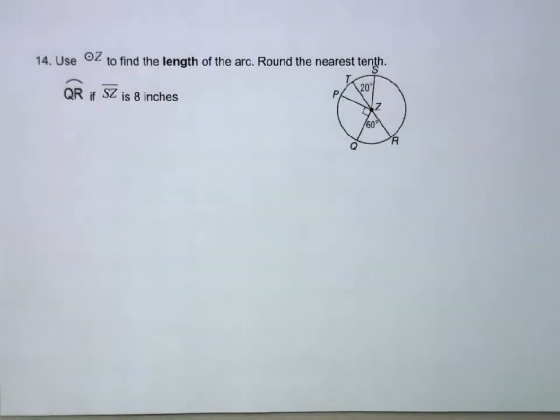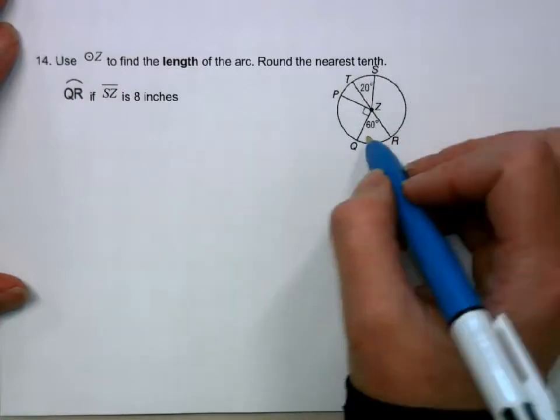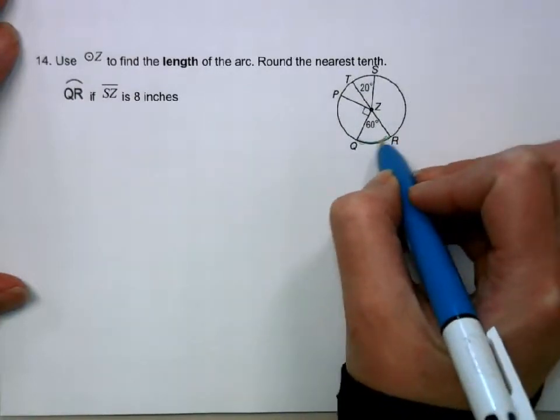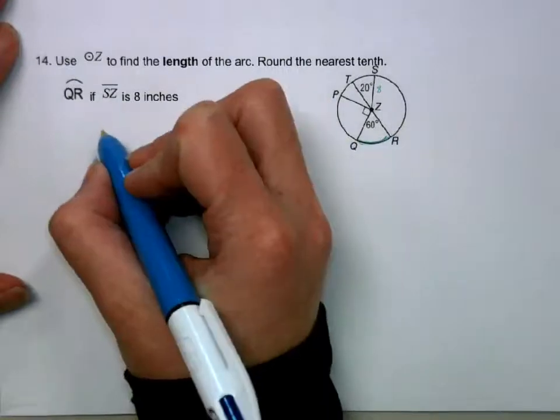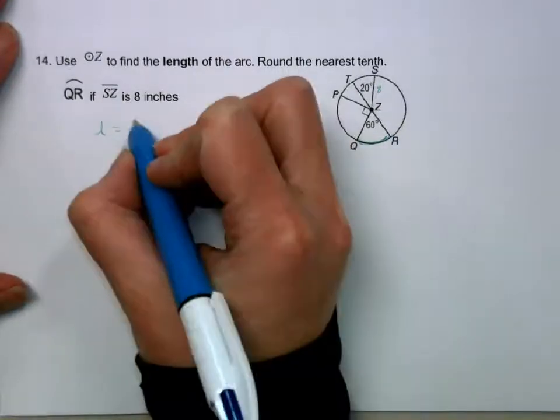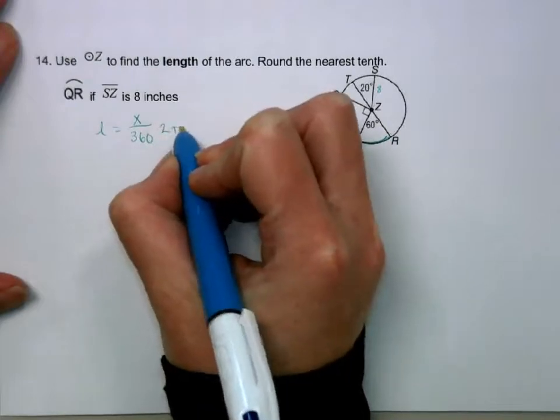Okay, for question 14, use circle Z to find the length. Length is different than the measure. Length is the actual distance that we want. So I want QR if SZ is 8. So the formula for arc length is the central angle over 360 times 2 pi r.